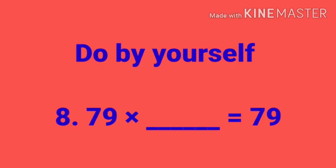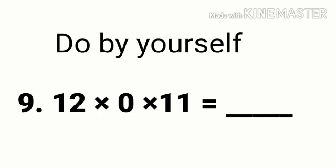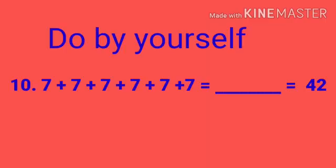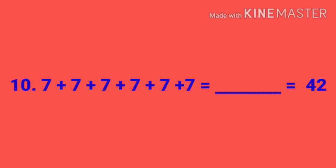Question number 8: 79 into dash is equal to 79. Question number 9: 12 into 0 into 11 equals to dash. And the last question, number 10: 7 plus 7 plus 7 plus 7 plus 7 plus 7 plus 7 equals to dash, equals to 42.